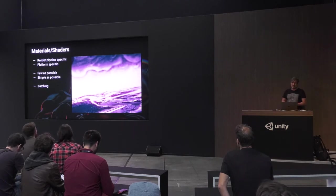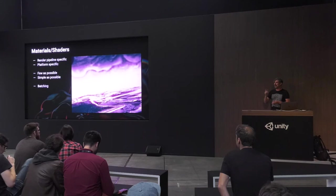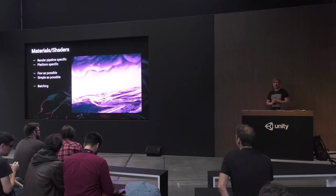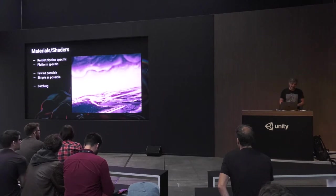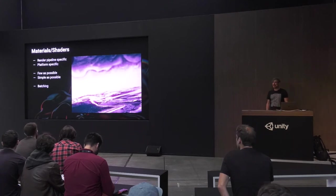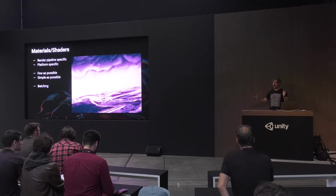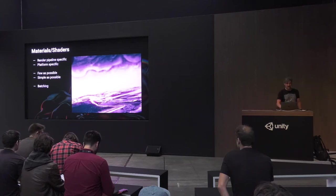Materials and shaders are platform-specific and render pipeline-specific. You basically want to use as few as possible and keep them as simple as possible for what you're trying to do. You don't want a ton of extra channels, extra code, or extra render passes. If you have your meshes set to static, Unity will start to batch things with the same materials, so use those in a conservative way.